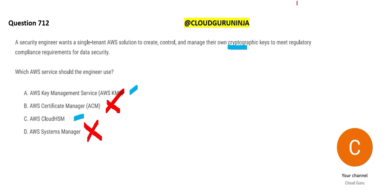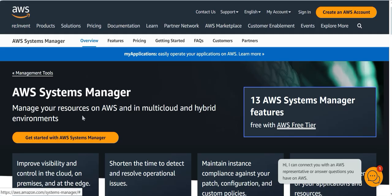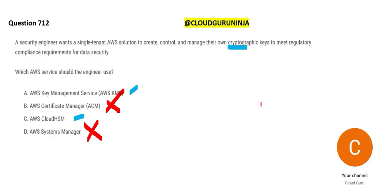Systems Manager is also not a key management solution — it is used to manage resources across hybrid cloud and multi-cloud environments. Hybrid cloud means on-premises plus cloud; multi-cloud means AWS, Azure, GCP, and so on. Since nobody in this question is talking about hybrid or multi-cloud strategy, Systems Manager is wrong. We now have to choose between CloudHSM and KMS.